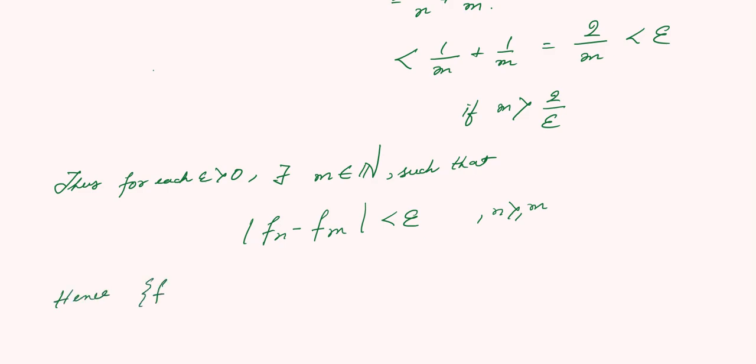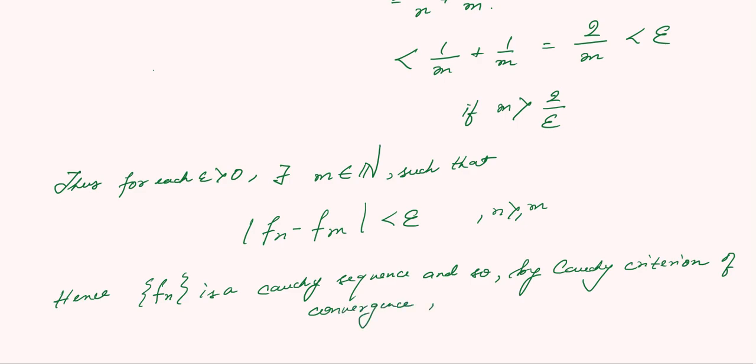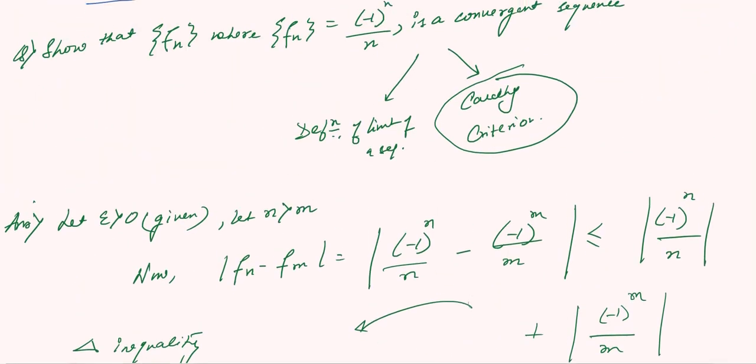Hence, f_n is a Cauchy sequence, and so by Cauchy's criteria of convergence, f_n is a convergent sequence. And that is how we proved that this is convergent by using Cauchy's criteria.